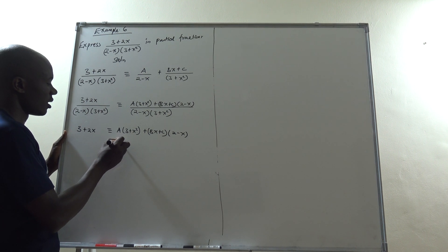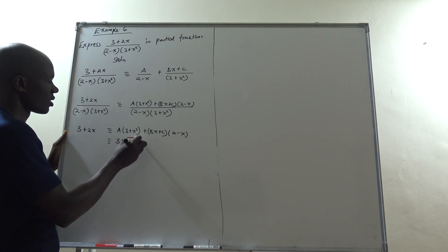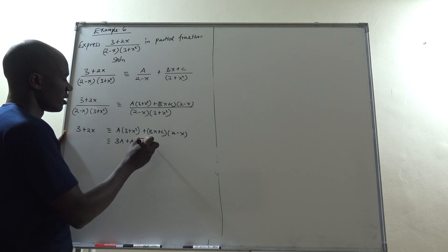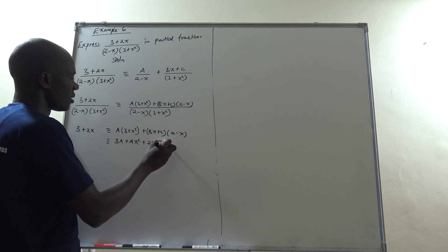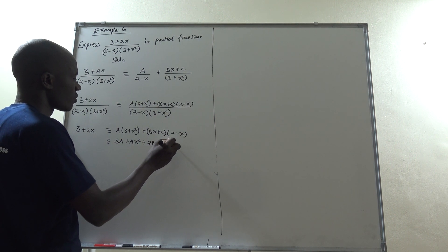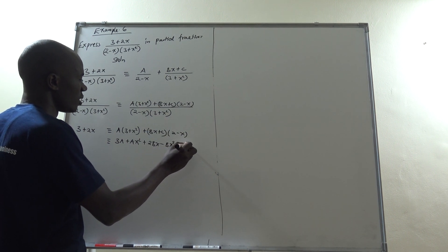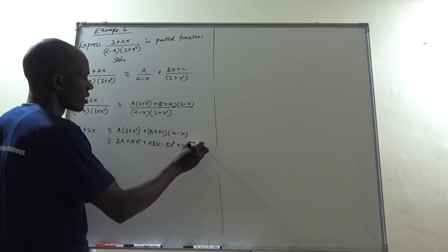Expanding: from A(3 + x²) we get 3A + Ax², and from (Bx + C)(2 − x) we get 2Bx − Bx² + 2C − Cx.